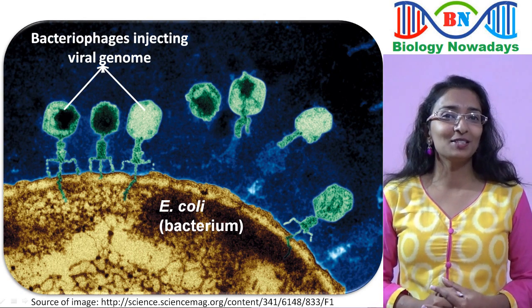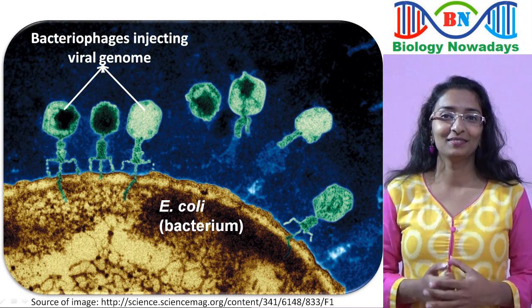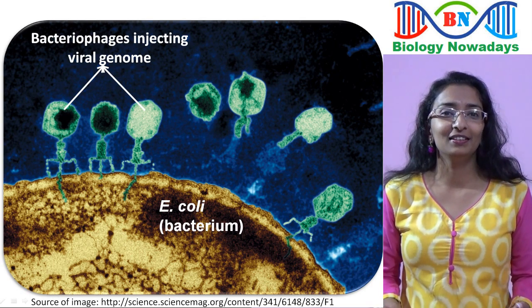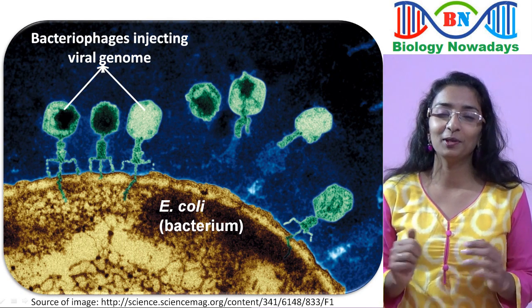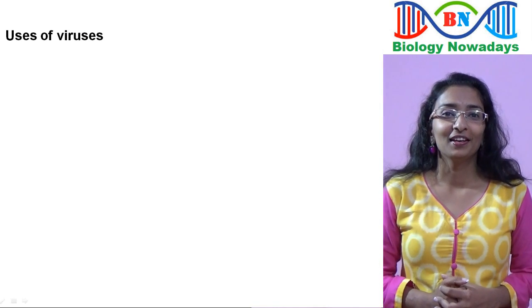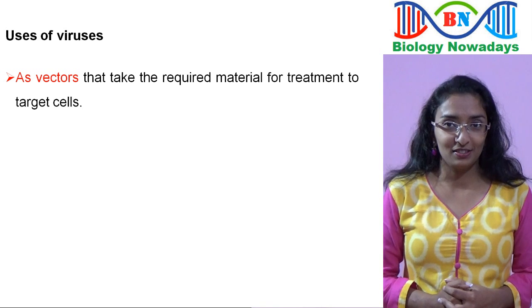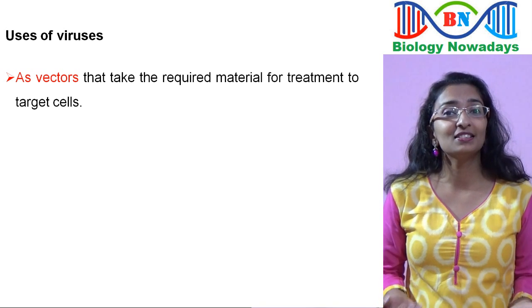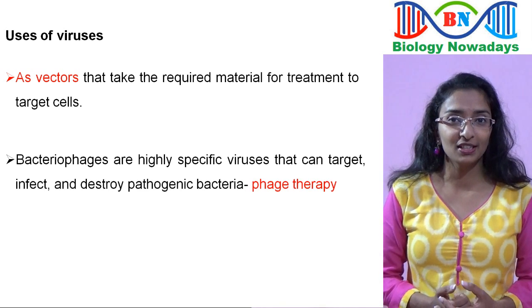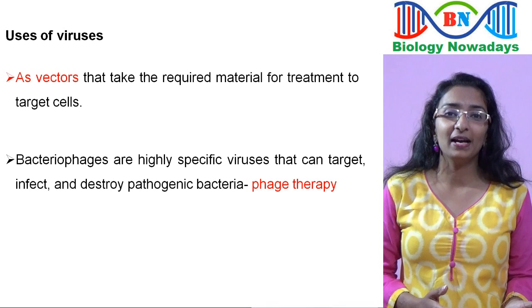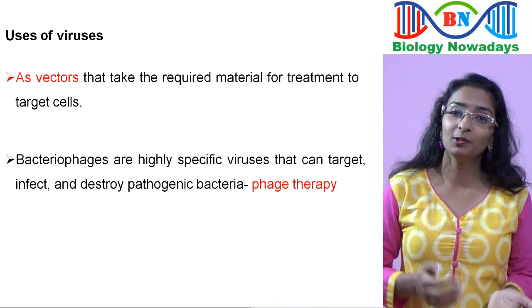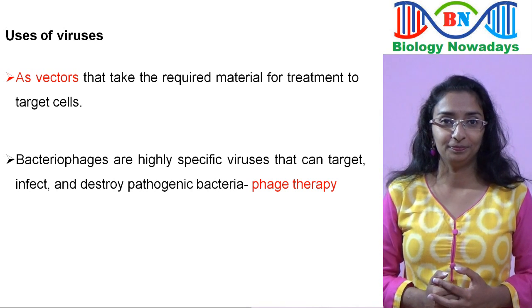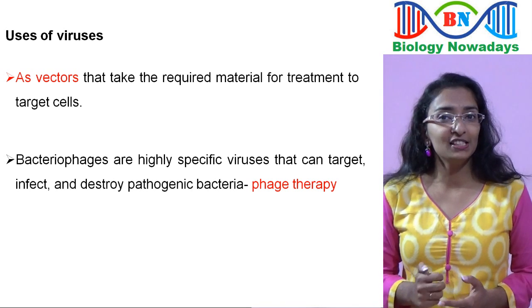This picture shows some bacteriophages injecting their viral genetic material into E. coli bacteria — notice how small a virus is compared to a bacterial cell. Although viruses are deadly, they also have some uses. They can be used as vectors that deliver required material for treatment of diseases to various target cells. Bacteriophages attack only bacteria and not human cells, so they can be used to infect and destroy pathogenic bacteria found in humans. This is called phage therapy.